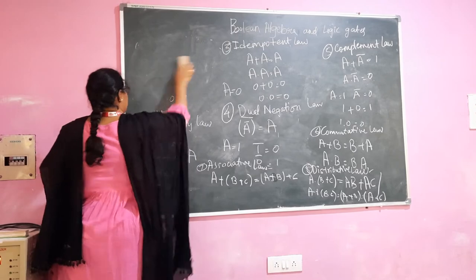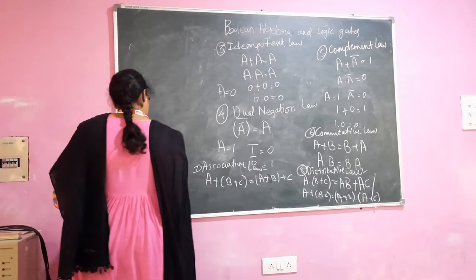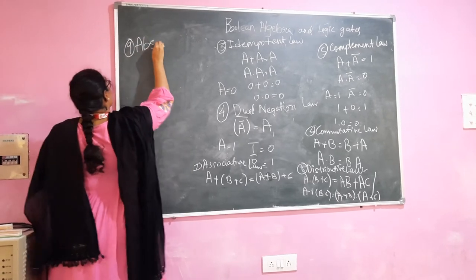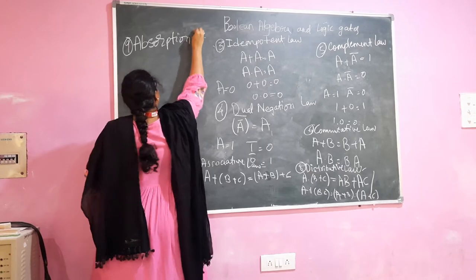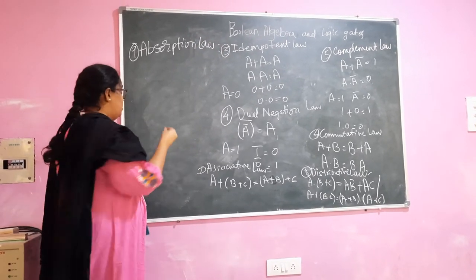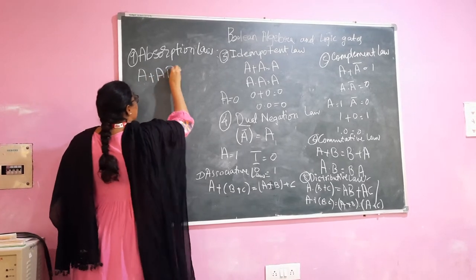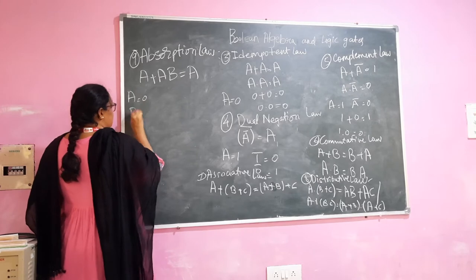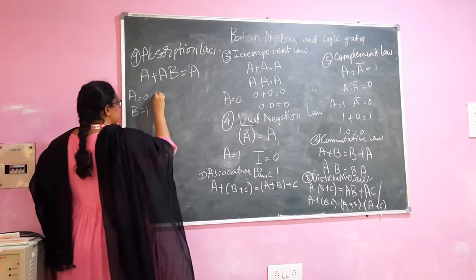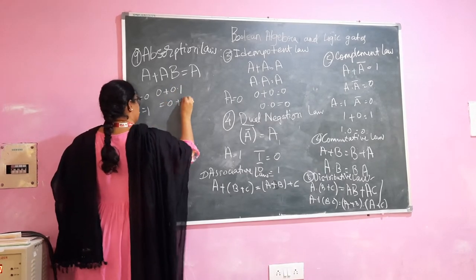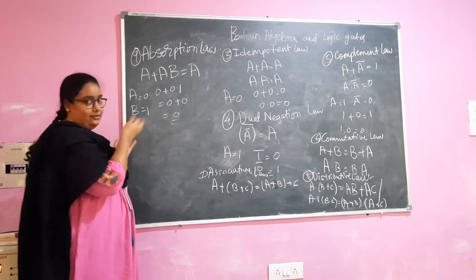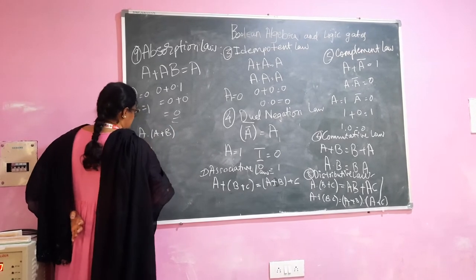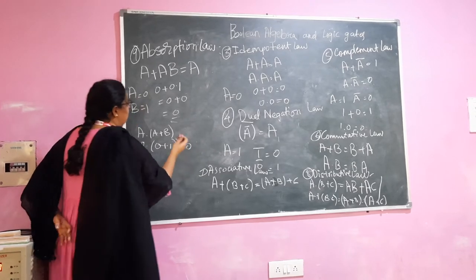The next one is the absorption law. This is how it is written. For example, if we take A equal to 0 and B equal to 1, we substitute these values: 0 plus (0 AND 1) gives 0 plus 0, which equals 0 — that is A, which we put in. Similarly, A dot (A plus B) with the same variables: 0 AND (0 plus 1) gives 0. This is what the absorption law states.